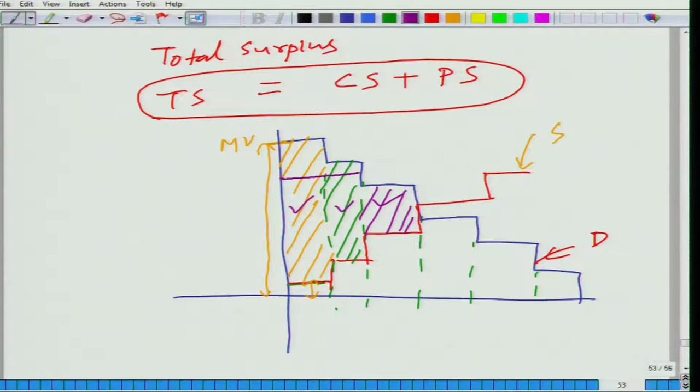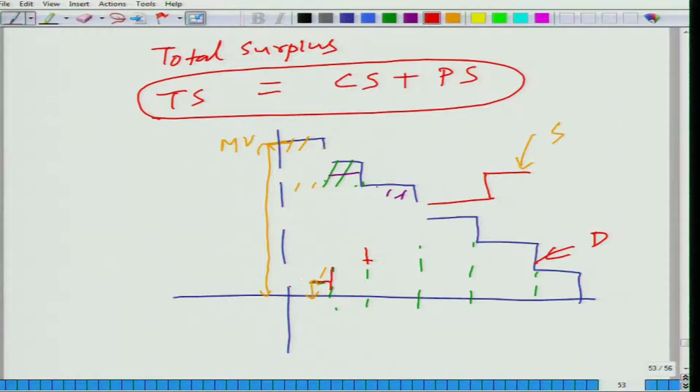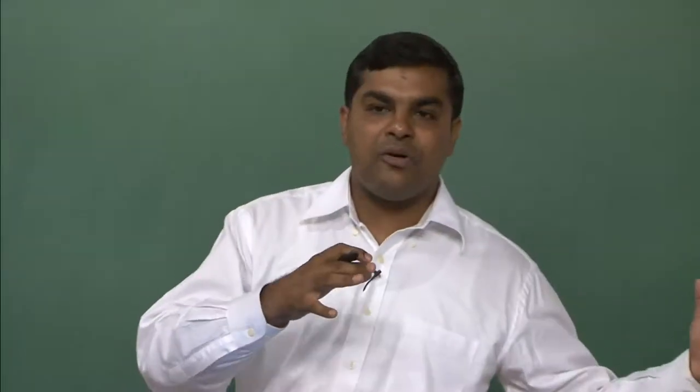Of course, how much is the consumer surplus? It would depend. If market price is here, then only this much is consumer surplus and remaining is producer surplus. If market price is here, then you will have more of consumer surplus. But right now, when we are talking about total surplus, what we are talking about is the sum of consumer surplus and producer surplus.